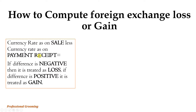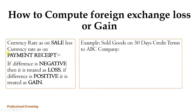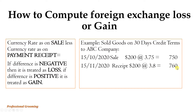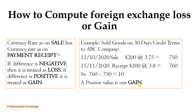Alternatively, payment receipt minus sales value — if negative it is a loss, if positive it is a gain. For example: goods sold to ABC company on 15 October 2020 for $200 at rate 3.75, giving 750. Payment received on 15 November 2020 at rate 3.8, giving 760. So 760 minus 750 equals 10 — a positive value, meaning a gain of 10.